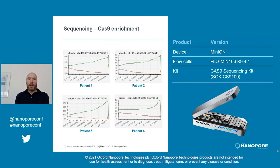The nanopore sequencing was carried out on the MinION using the Cas9 sequencing kit for targeting. We got very good coverage in patients 1 and 3, while it was somewhat low in 2 and 4, and this is likely because the samples are quite old and have been sitting in the freezer for several years, but we were able to carry out all the intended analysis.